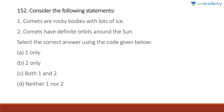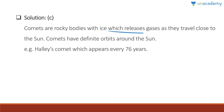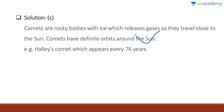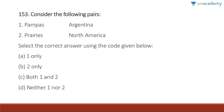Question 152: Comets are rocky bodies with lots of ice — correct. Comets have definite orbits around the sun — also correct. Answer is C, both one and two. Comets are rocky bodies with ice which release gas as they travel close to the sun, and the tail of the comet always points away from the sun due to evaporation caused by solar winds. Halley's Comet appears every 76 years.